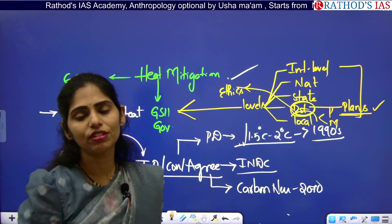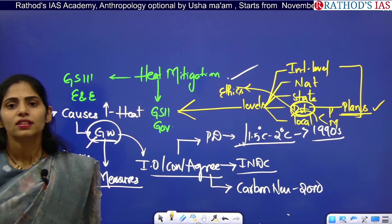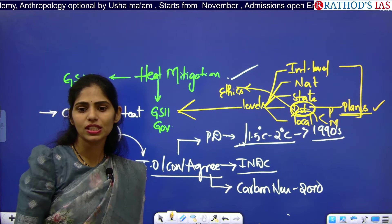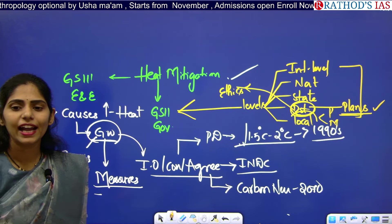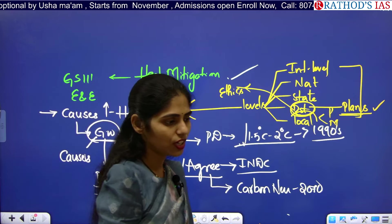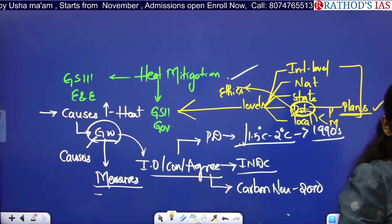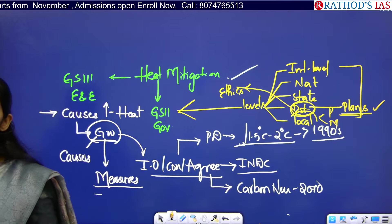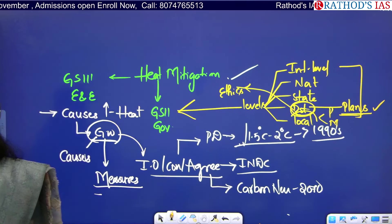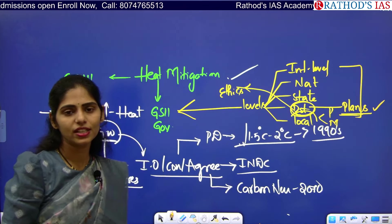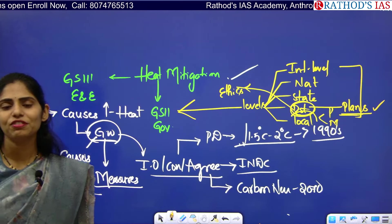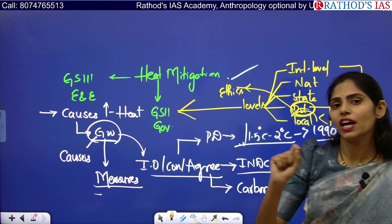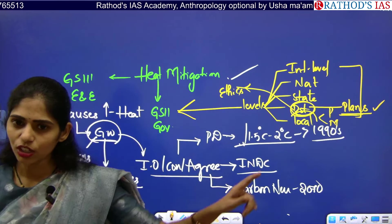At the national level, we have CAQM — the Commission for Air Quality Management in Delhi — which controls air pollution and CO2 emissions. We also have the Air Quality Index, the vehicle scrappage policy, PM eDrive, PM FAME program, and PM Solar schemes like PM Surya Ghar Muft Bijli Yojana. There are more than 10 such schemes you can add.